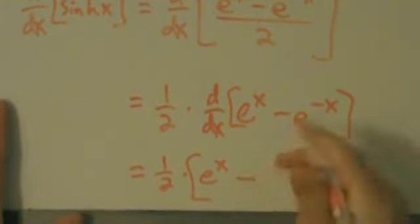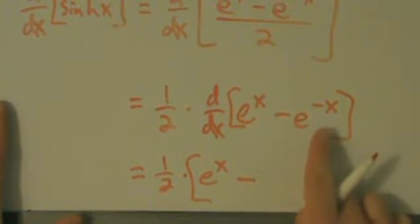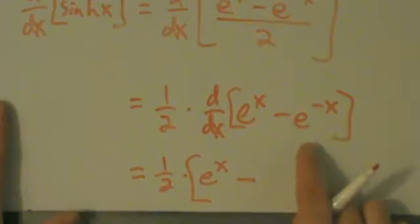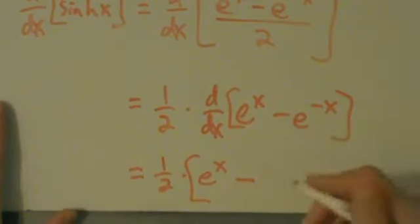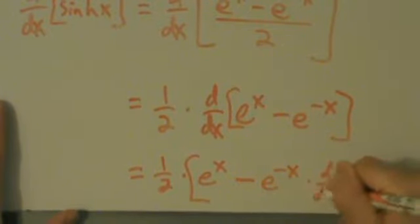How about the second term here? We have minus, okay, minus sign here, minus d dx of e to the negative x. So here we kind of need a chain rule, right? So the derivative of e to a thing is just e to that thing times the derivative of that thing.